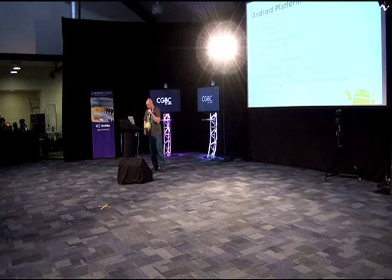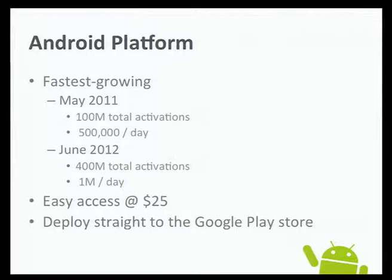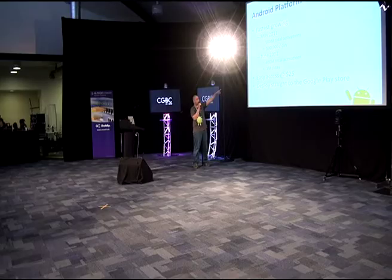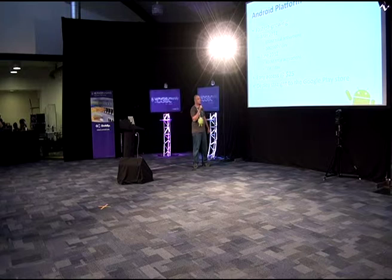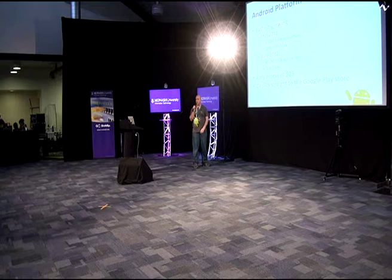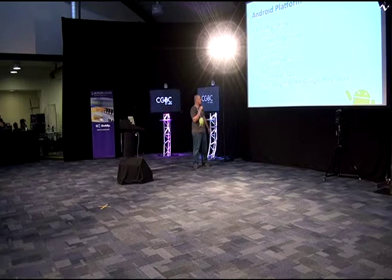The Android platform is the fastest growing mobile platform on the planet. Around this time last year there were about half a million activations a day — meaning half a million people were turning on their new Android phone per day. This year there's about a million activations every day. To become an Android developer, you don't have to pay $100 each year — you pay $25 once off, done, for the rest of your life. And a good thing about developing for Android is that your app doesn't get sandboxed or put away for inspection — it goes straight to the Play Store the moment you want to release it.